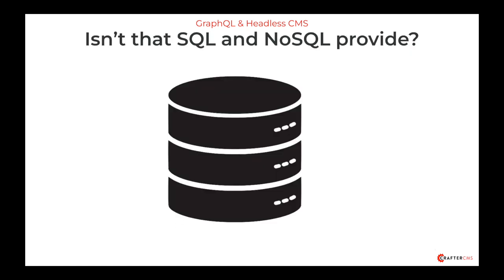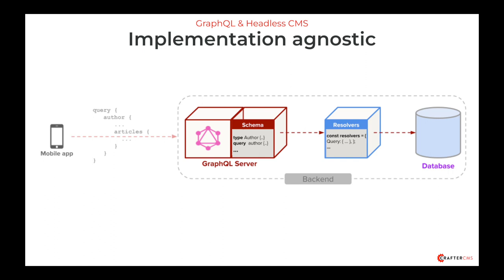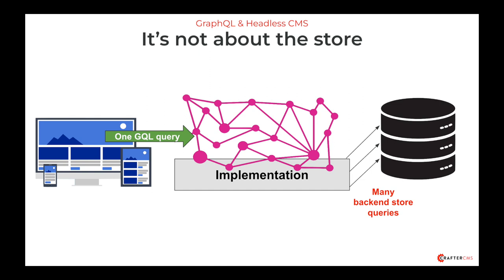Isn't that just what SQL and NoSQL provide? The difference here is that GraphQL is implementation agnostic. Any kind of server can implement the GraphQL specification, present itself as a GraphQL server, and then map onto that backend technology. Whereas SQL and NoSQL databases tend to be very implementation specific. With GraphQL, it's not about the store.